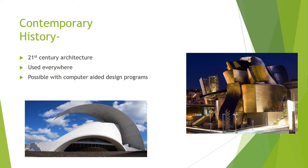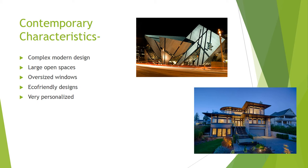The Contemporary Architectural Style is the architecture of the 21st century to today. Where modern architecture was primarily prevalent in the United States and Western Europe, contemporary architecture is used everywhere. The Contemporary Architectural Style became more possible with the use of computer-aided design programs, because of the complexity and accuracy needed to build these buildings. It incorporates many different design styles, so there is no precise definition.